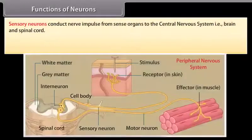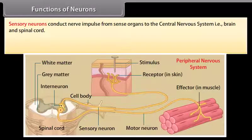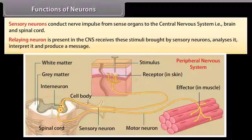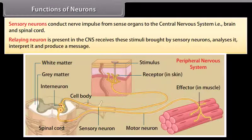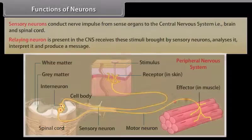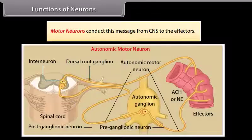Sensory neurons conduct nerve impulses from sense organs to the central nervous system — that is, the brain and spinal cord. The relaying neuron, present in the CNS, receives stimuli brought by sensory neurons, analyzes and interprets them, and produces a message. Motor neurons then conduct this message from the CNS to the effectors.